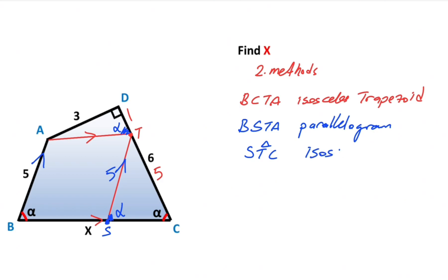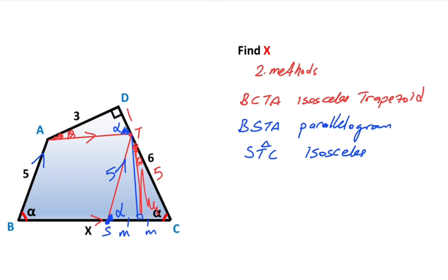If you focus on triangle STC, this triangle is an isosceles triangle. Therefore if we draw a perpendicular line onto the base, the base will be divided into two equal parts. Let's represent these two equal lengths as m, and call this angle theta — here must also be equal to angle theta. Then if you focus on triangle ADT, this triangle and triangle PTC have the same angles, meaning these two triangles are similar.